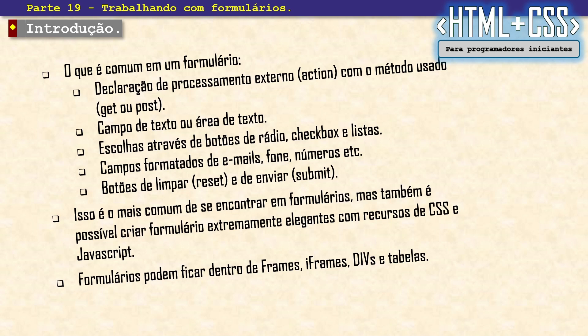No HTML5 eu já tenho pronto — não preciso mais me preocupar. Posso ter campos de e-mail, fone, números etc., já formatados. O HTML5 já tem uma máscara padrão para cada campo: campo de e-mail só vai valer se for e-mail, campo de telefone só vai valer se for telefone, campo de CEP só vale se for CEP. Tenho dois botões comuns: o reset, que limpa tudo de uma vez, e o submit, que envia as informações — geralmente a declaração action informa o que vai acontecer.